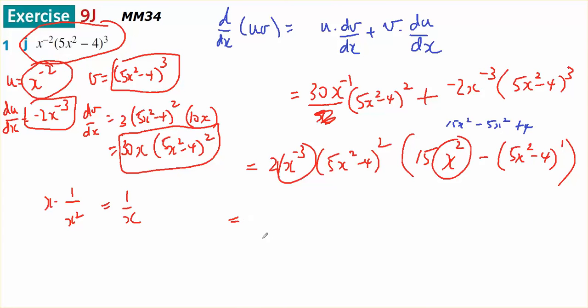My final answer is 2 over x cubed, 5x squared minus 4 squared and 15 minus 5, 10x squared plus 4.